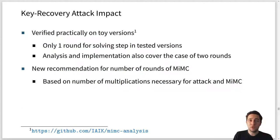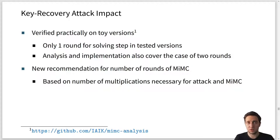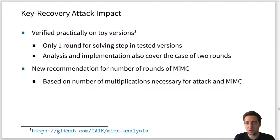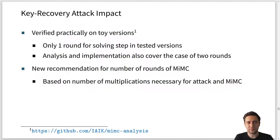We have verified this attack practically on toy versions of MiMC. Interestingly, in all cases we tested, one round was sufficient to cover by the solving step, meaning R minus 1 rounds were always covered by the inverse distinguisher. This is not guaranteed by the theory but was confirmed in our practical tests. Our analysis and implementation cover both the one-round and two-round cases, and there are no more than two rounds that need to be covered according to the theory.